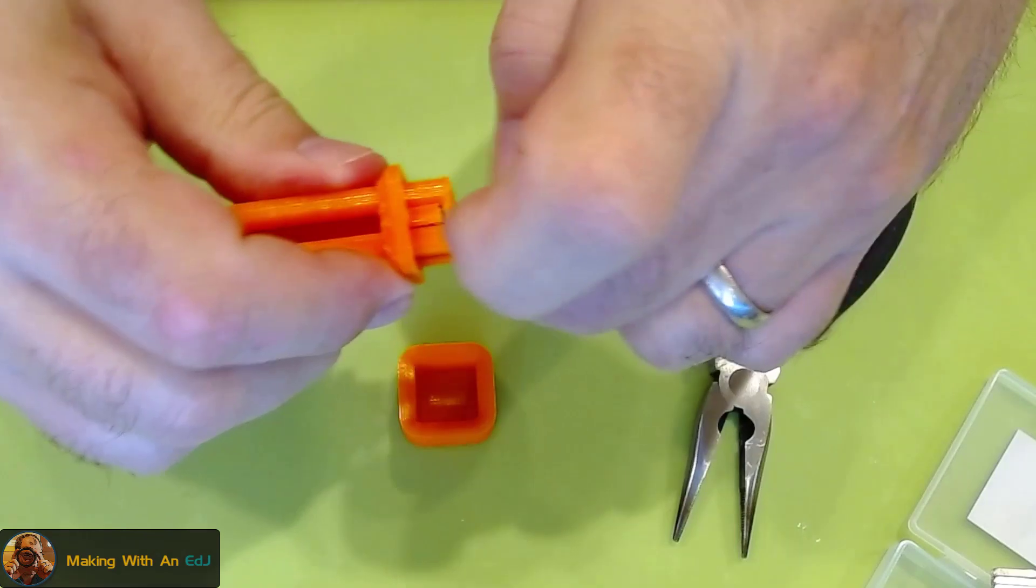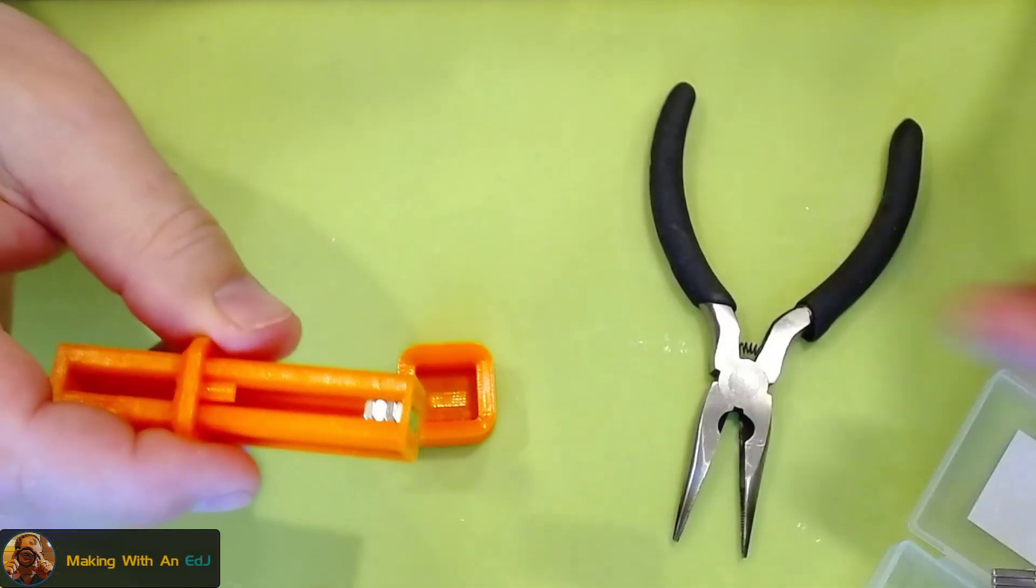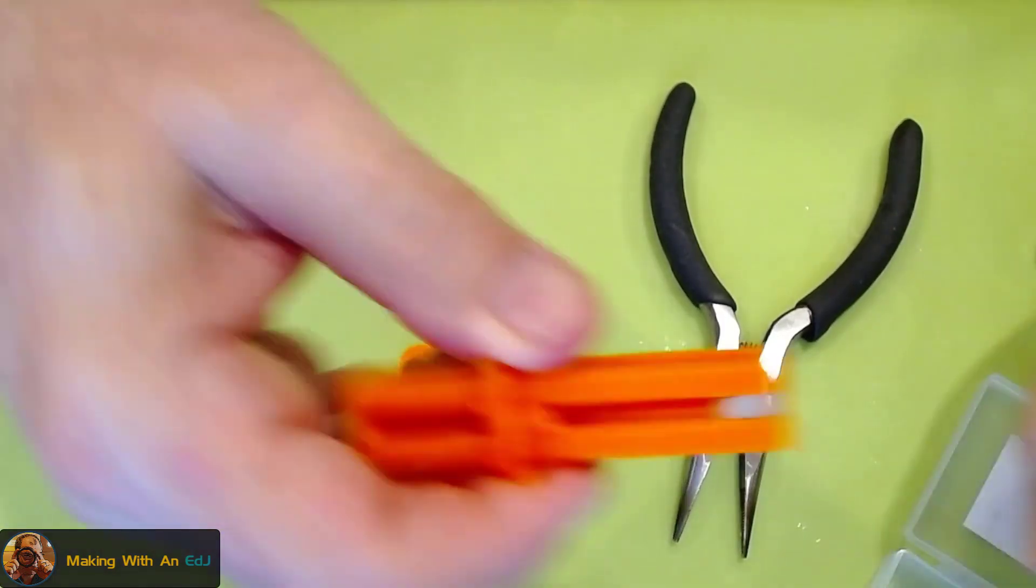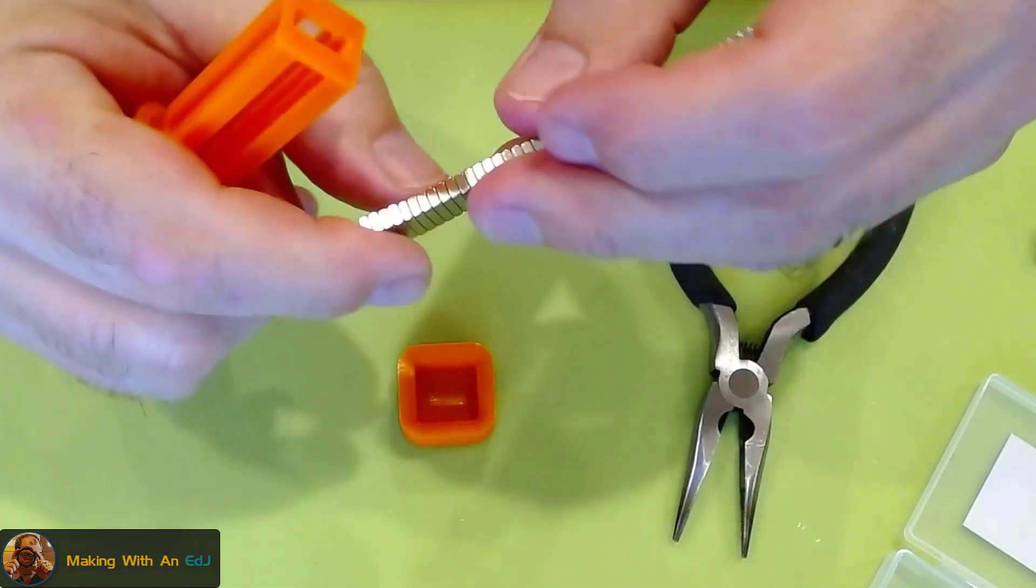And what that does, if you do it right, is it leaves a couple magnets in the chamber so that when you reload it with more from your stock, you can make sure the polarity is correct. And I had that wrong.